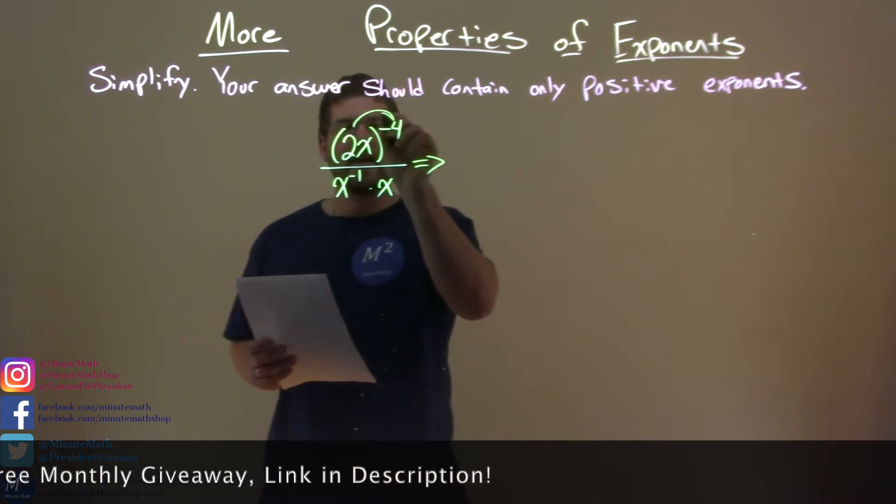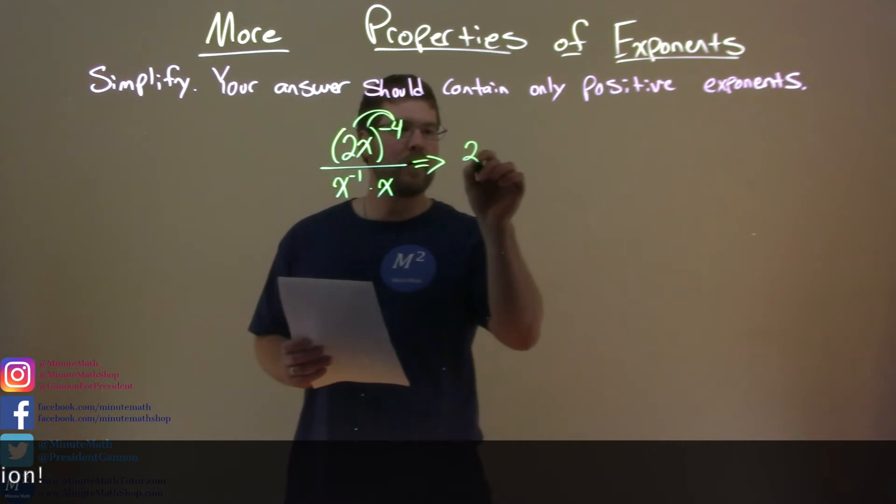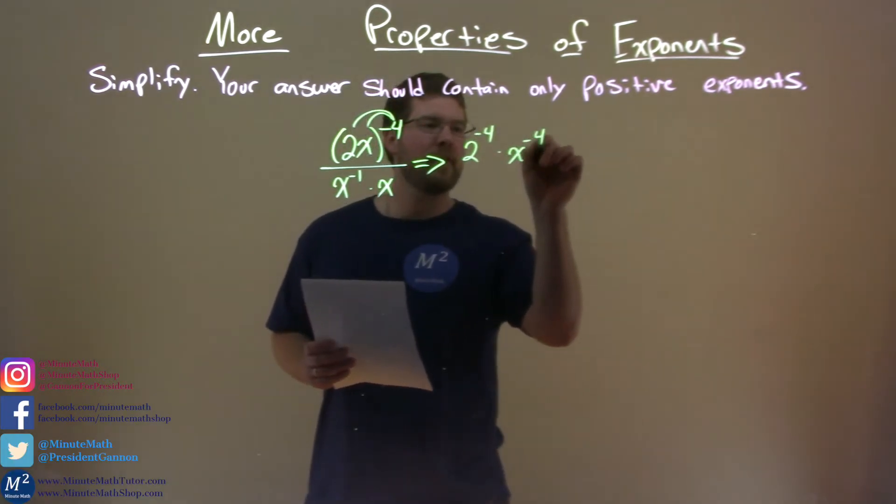Numerator. Distribute that negative four to both parts here. Two to the negative fourth power times x to the negative fourth power.